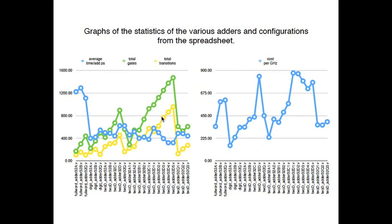Each of the adders in the various configurations is simulated in Verilog. We collected statistics over the simulations: total gates counted from the design, total transitions counted from the design, and average time taken from the Verilog simulations. The full word completeness adders have very few gates and very few transitions, but they're extremely slow. C and D are not included because they're way off the chart. Q has the lowest number of transitions but more gates.